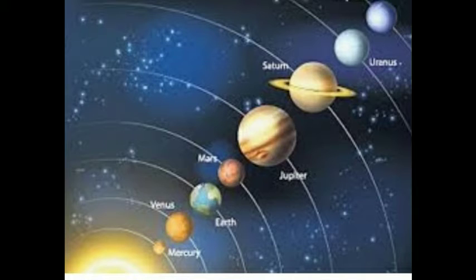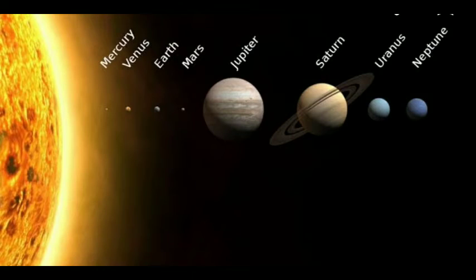The 8 planets are Mercury, Venus, Earth, Mars, Jupiter, Saturn, Uranus, and Neptune. These are the 8 planets.